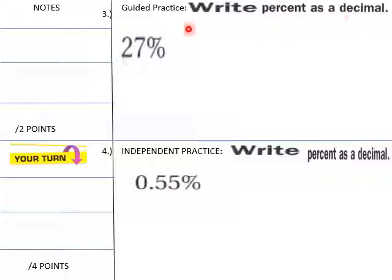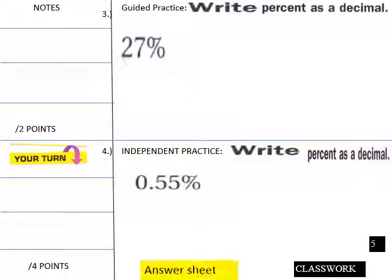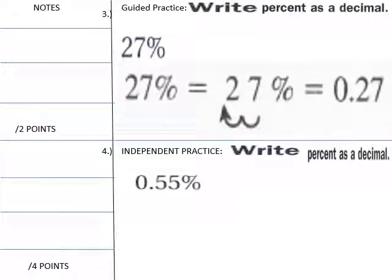Okay, write percent as a decimal. We're going to do this again. So let's get in practice in doing this. Move our decimal to the left. 0.27 for 27 percent. Students, this is yours here.